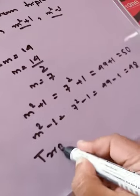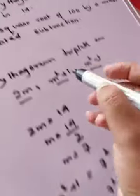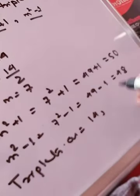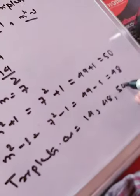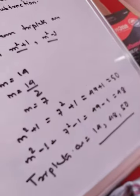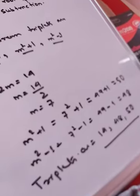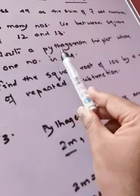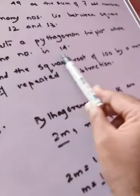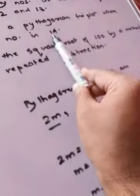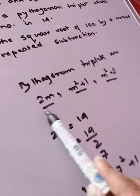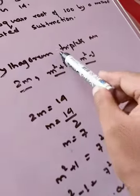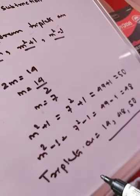So the Pythagorean triplets are: the one number already given is 14, the second number is 48, and the third number is 50. These are the Pythagorean triplets. In the question paper, one number will always be given. When that happens, always compare that number with 2m, find the value of m, and then compute the other two numbers using m squared plus 1 and m squared minus 1.